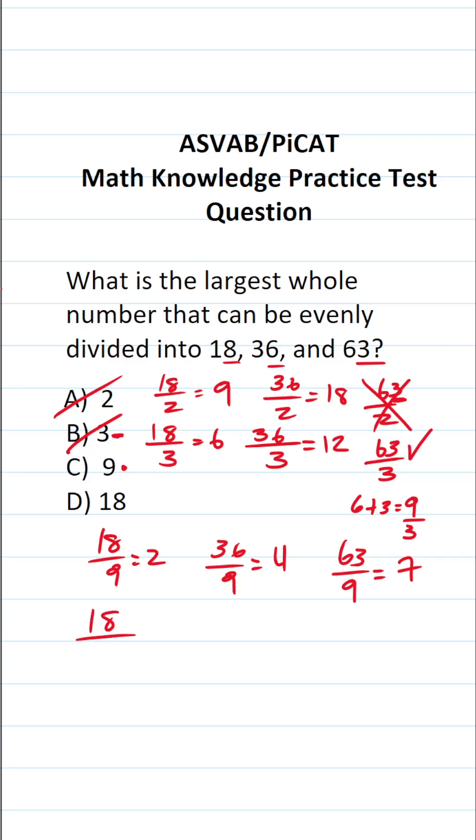What about 18? 18 divided by 18 is 1. 36 divided by 18 is 2. What about 63? Is 63 divisible by 18? How many times does 18 go into 63 without going over?